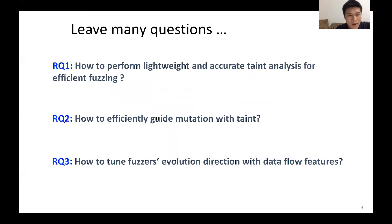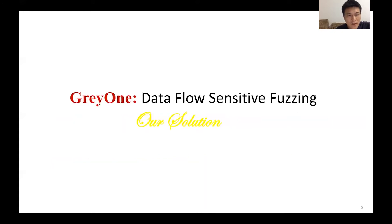So it leaves us many questions to ask. Question 1: How do we break through the limitations of traditional taint analysis and perform lightweight and accurate taint analysis for efficient fuzzing? Question 2: Once getting accurate taint information, how do we use it to guide more efficient mutations in fuzzing? Question 3: How to accelerate code coverage by tuning fuzzing's evolution direction with dataflow features?